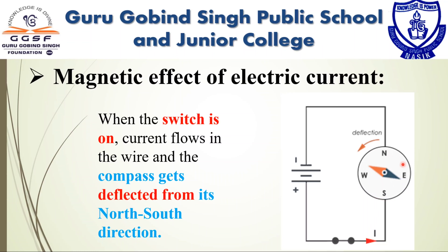A magnetic compass is made up of tiny magnets and can only be deflected by a magnetic field. So Oersted concluded that when a wire carries electric current, it behaves like a magnet. A current-carrying wire creates a magnetic field around it, and this is called the magnetic effect of electric current, or electromagnetism.